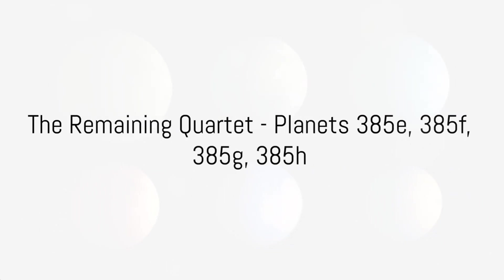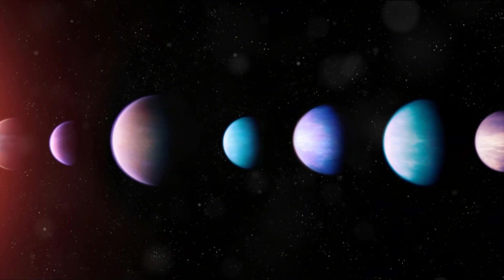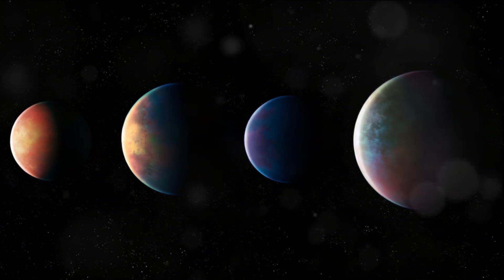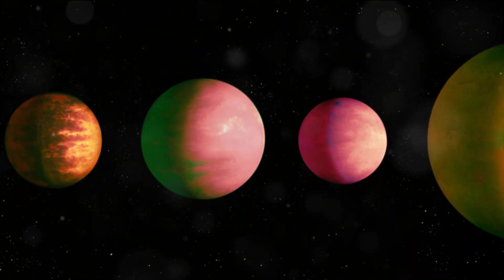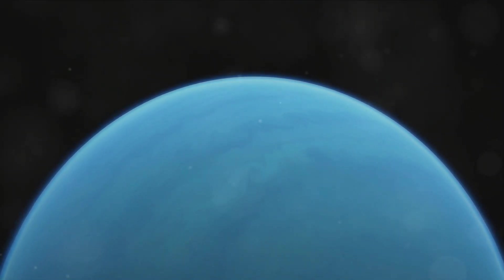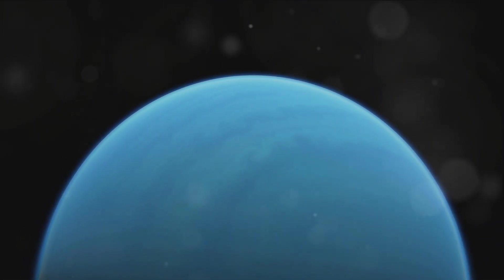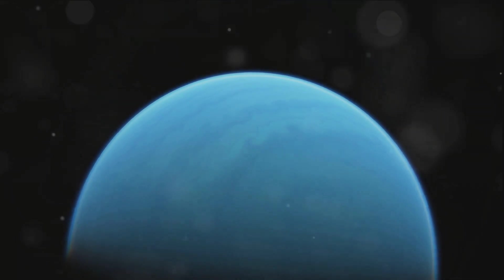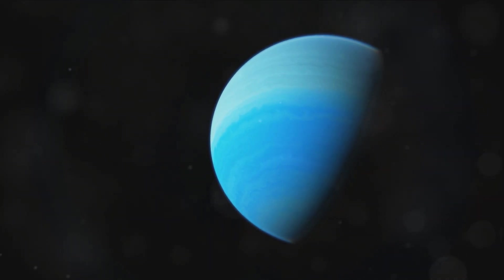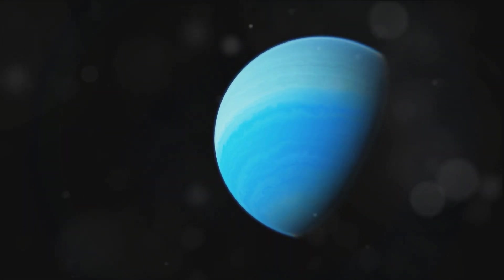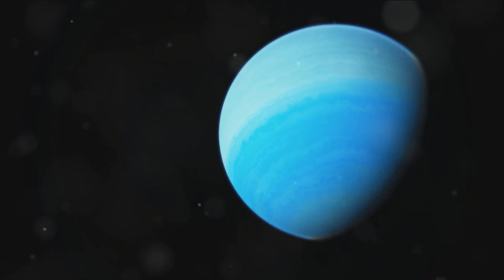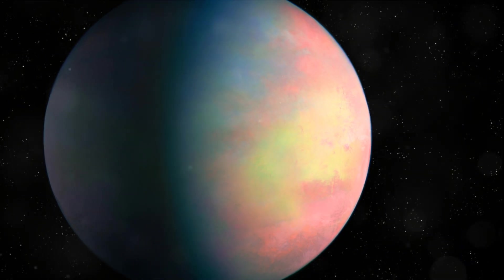Next, we delve into the remaining quartet of planets: 385e, 385f, 385g, and 385h. Each of these celestial bodies orbiting the star Kepler 385 holds its own unique characteristics and mysteries. Let's start with Kepler 385e. This planet is roughly the size of Neptune, making it a gas giant in its own right. It orbits its star every 85 Earth days. This gas giant is especially intriguing due to its relatively close proximity to its star, raising questions about its atmospheric composition and the possibility of extreme weather conditions.